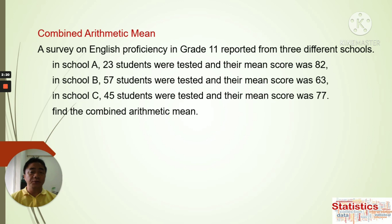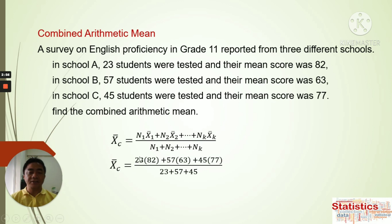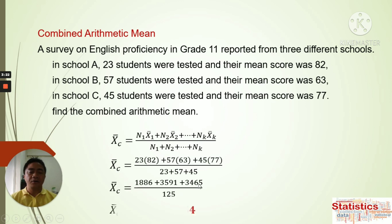We are going to figure out what is the mean score of all of these students. Using the formula, the number of students is the value of n, and the mean score is x-bar for each set. So we substitute: n1 is 23 with mean for School A, n2 is 57 for School B, and n3 is 45 for School C. We also have the sum of all respondents in the denominator.